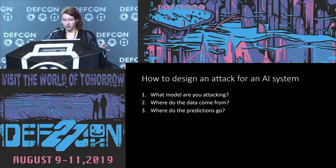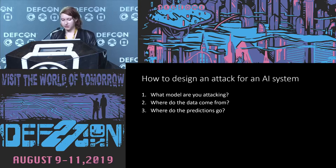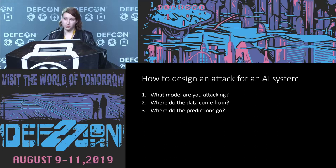Those are some of the ways to attack an AI system, but how do we go about designing one of these attacks fresh? The principles in the academic literature can be broken down into three questions. You want to know what kind of model you're attacking — is it deep learning, logistic regression, or a decision tree? Knowing the algorithm gives you an idea of where to look in the academic literature for prior art. You also want to know where the data comes from and what format it's in, since dealing with images is much different than dealing with strings or text. And you want to know where the predictions go and what data the system outputs overall.